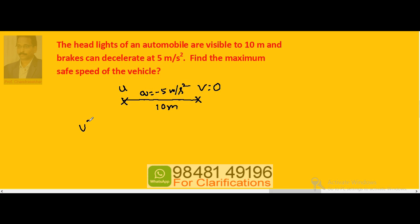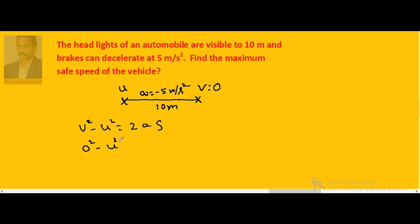We know that V squared minus U squared equals 2 a s. So final velocity is 0, initial maximum safe speed U is unknown, a is minus 5, and the distance is 10. So U squared equals 100, or U equals 10. The maximum safe speed of the vehicle is only 10 meters per second.